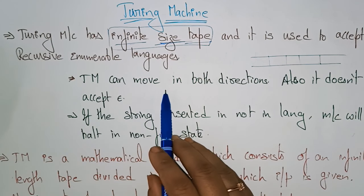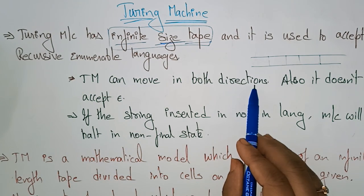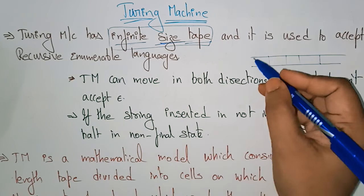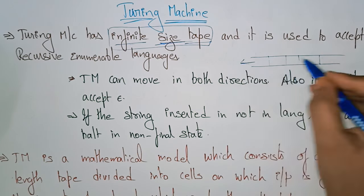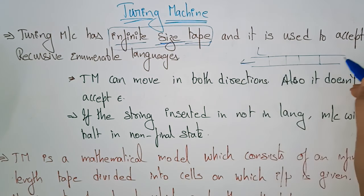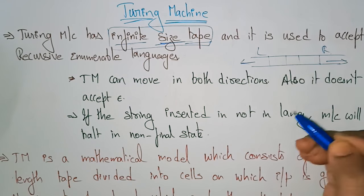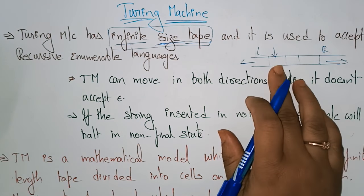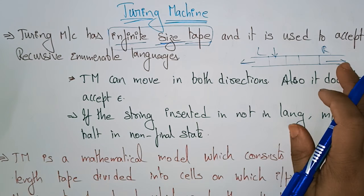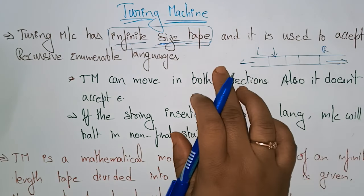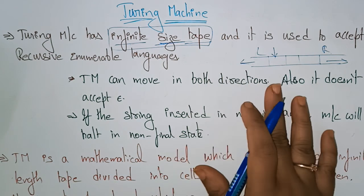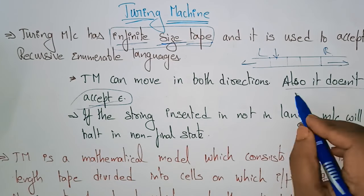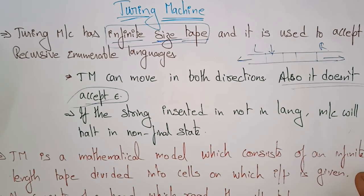A Turing Machine can move in both directions. Also, it does not accept epsilon. It can move either to the left side or to the right side. A tape consisting of some head, and that head can move towards the right or towards the left. But it does not accept epsilon.